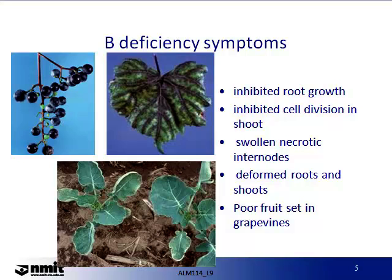Not only can you get boron deficiencies in plants, you can also get boron toxicity, where excess concentrations of boron cause a reduction of crop yield and loss of quality. Boron toxicity symptoms include yellowing of the leaf tips, interveinal chlorosis, and progressive scorching of the leaf margins. Boron toxicity is usually uncommon in many soils unless fertilisers or compost are high in boron. Field crops most sensitive to boron toxicity include corn and soybeans.